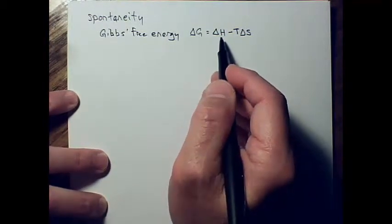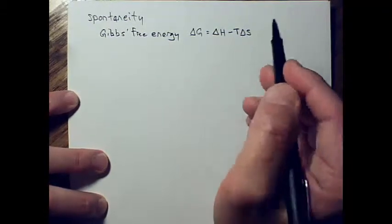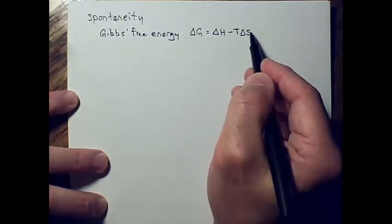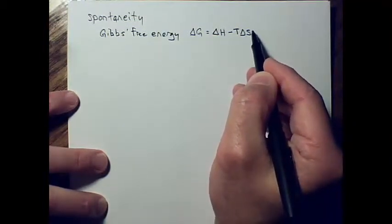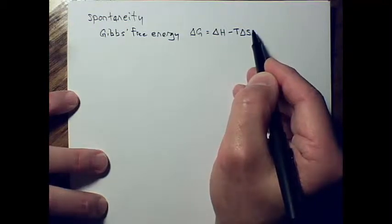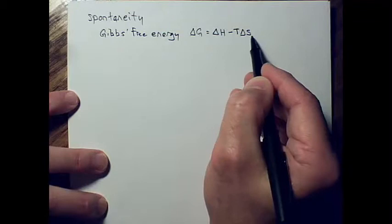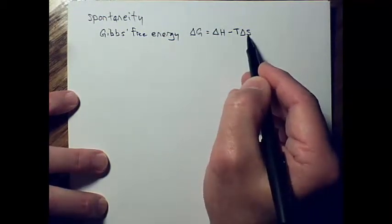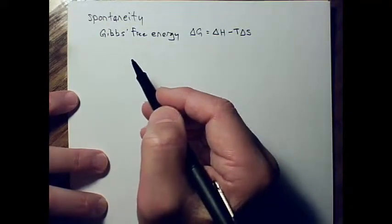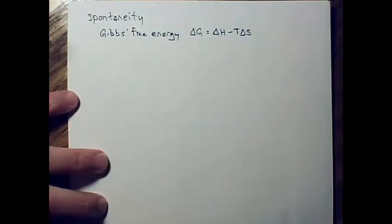We're going to approach this in a more general sense rather than doing a lot of math. One helpful thing to understand is that the entropy term, delta S, is almost always smaller than the enthalpy term, delta H. So if we were to do the actual math, the T times delta S term would be smaller most of the time than delta H.